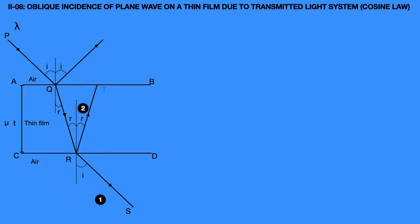T is on surface AB. Drawing a normal, the ray then touches the lower surface CD at N. The RT light ray makes an angle R with the normal. At point T, some part of the light ray is refracted to outside, making an angle I with the normal. Another part is reflected and reaches the lower surface CD at point U. This light ray TU makes an angle R with the normal — TU is also part of ray 2.